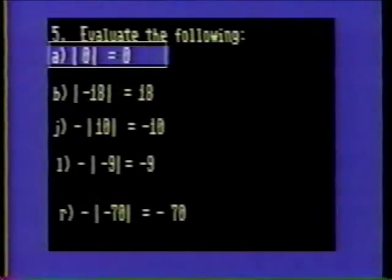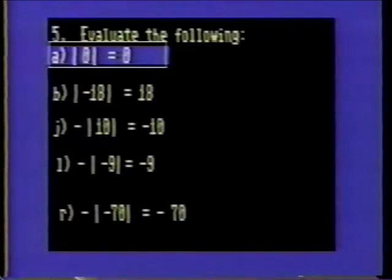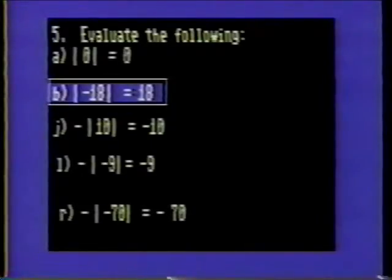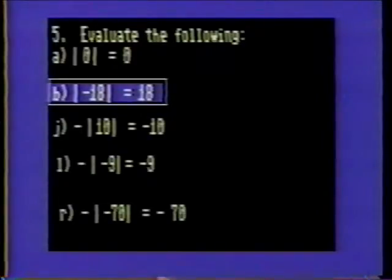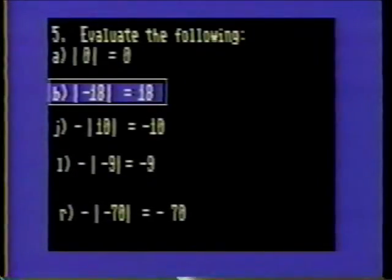Problem 5. Evaluate the following. 5A: The absolute value of zero is always zero — the distance of zero from zero is zero. Problem 5B: The absolute value of a negative number is a positive number. Remember, absolute value is concerned with distance and not direction. Minus 18 is 18 units from zero, thus its absolute value is 18.